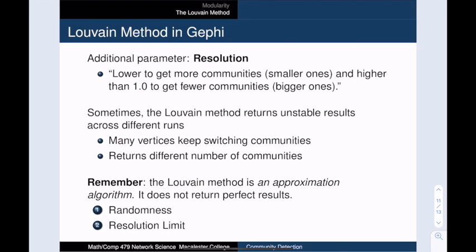Finally, I wanted to make a small comment about an option called resolution that you'll find when you use Gephi. When you bring up the modularity dialog, Gephi gives you the following advice. Make the resolution lower to get more communities, smaller ones, and higher to get fewer communities, bigger ones. When I use Gephi, I just use the default resolution to begin with. And I actually run community detection multiple times to see if I get stable results. There are a few things that can contribute to instability. Remember that the Louvain method is an approximation algorithm, so it has some randomness in it, and so your results can change from run to run.